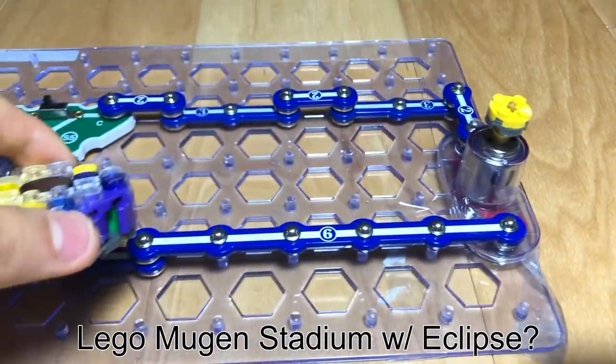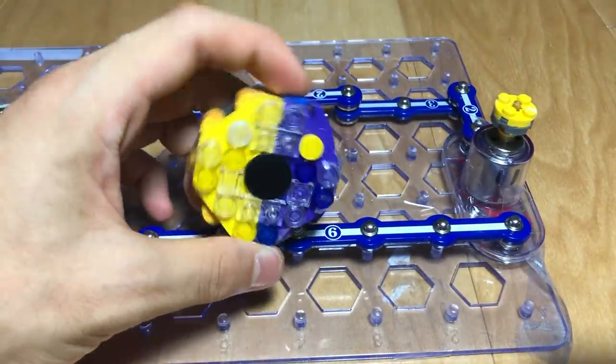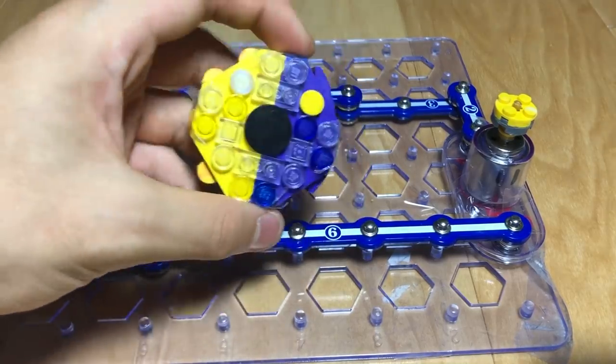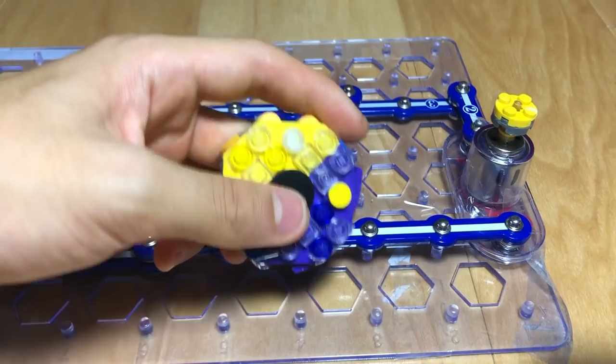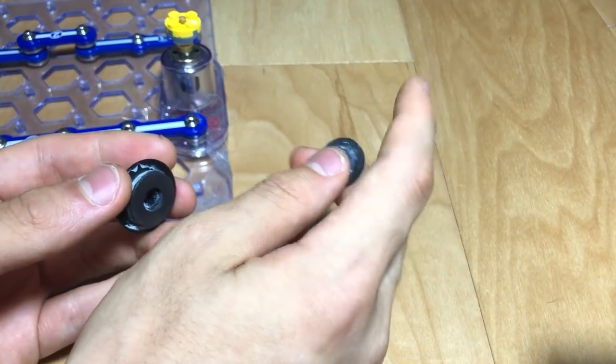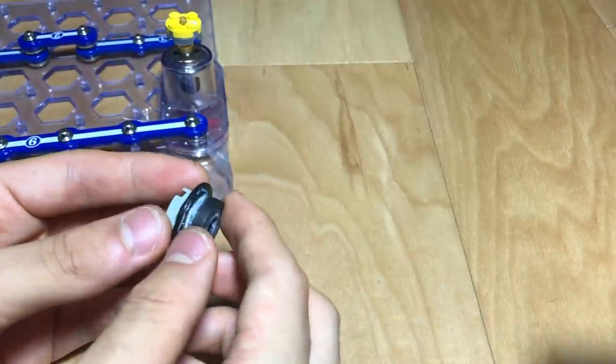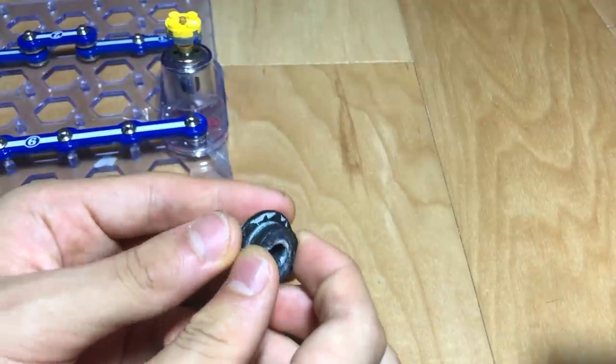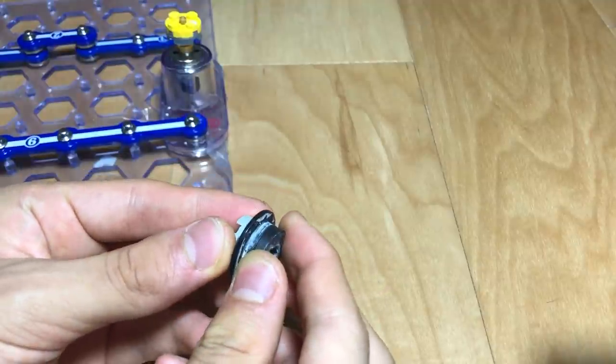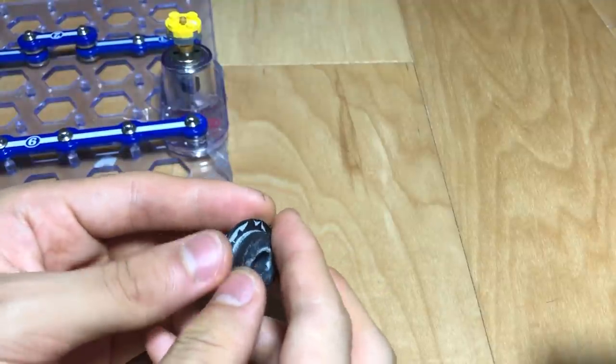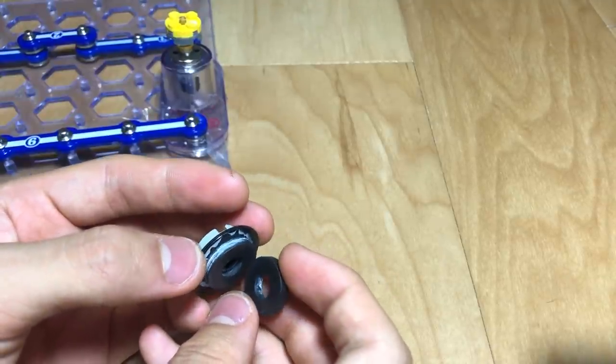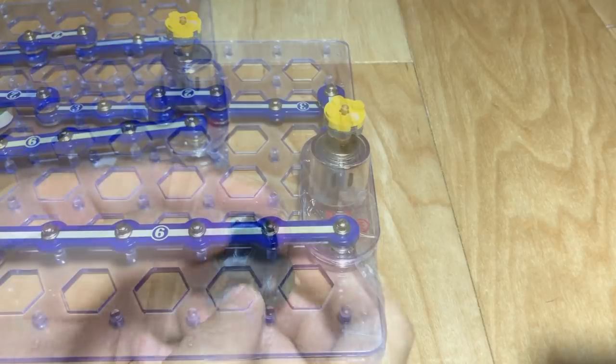Alright, at the beginning of the video, I did promise a return of the Lego Mugen Stadium with Lego Eclipse, but there is a bit of a catch from the previous magnetized one. You can find the Lego Mugen video up there in the top right of the screen. But basically, what I found was that this more realistic magnetic one, compared to the real Mugen Stadium, just wasn't long-term viable because of the friction caused by knocking it out. And so, over time, it would kind of wear down and, you know, just make it less effective.